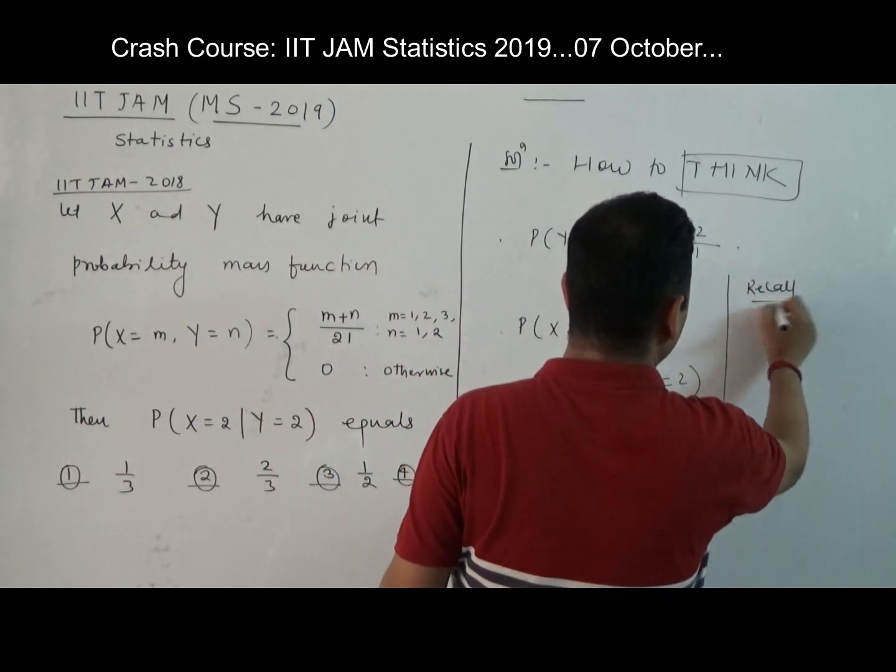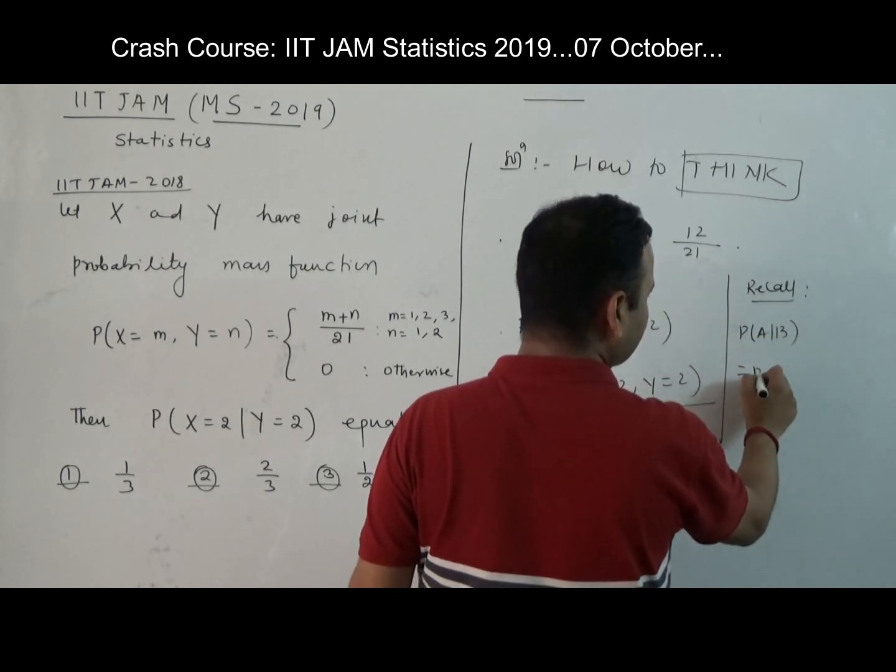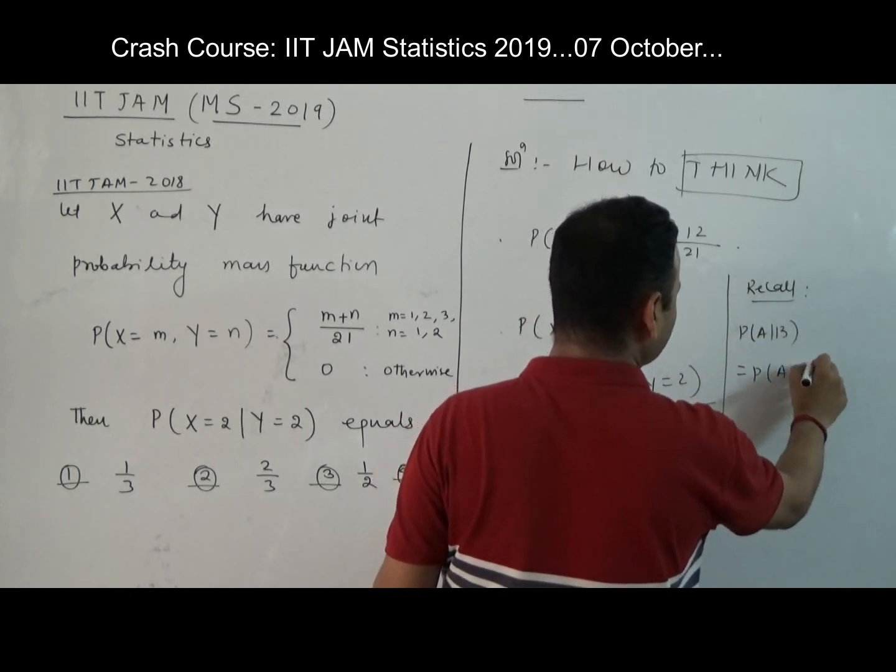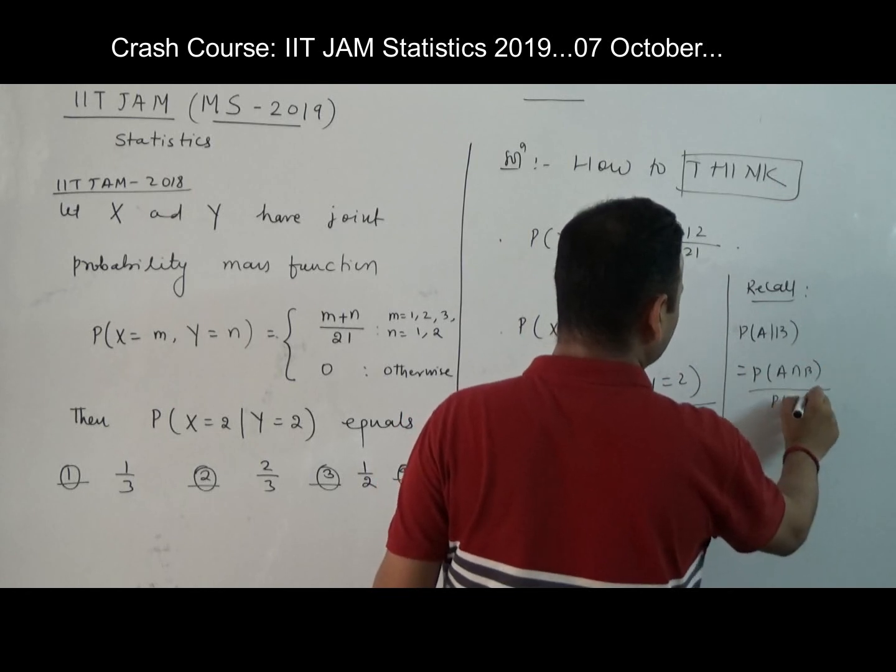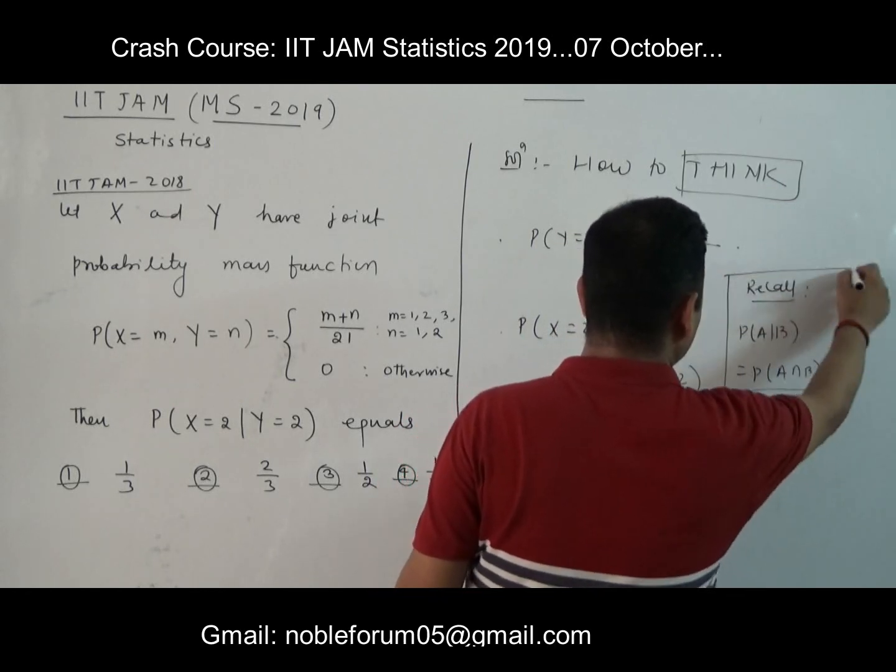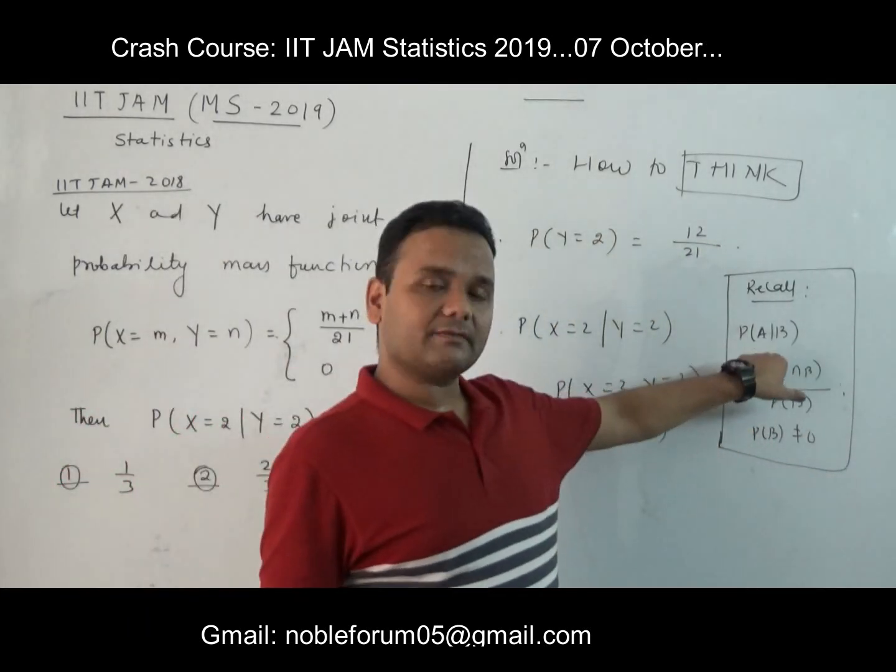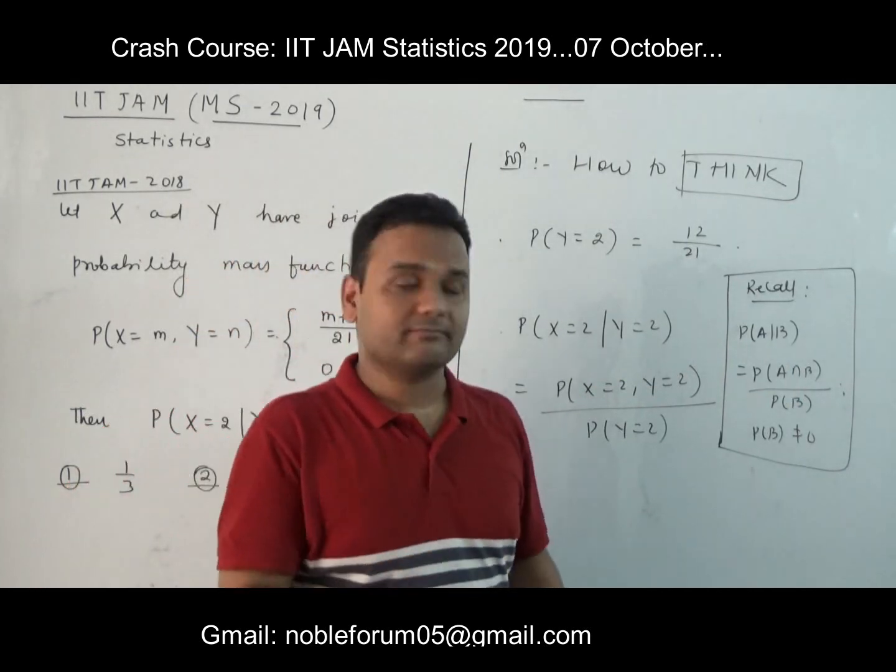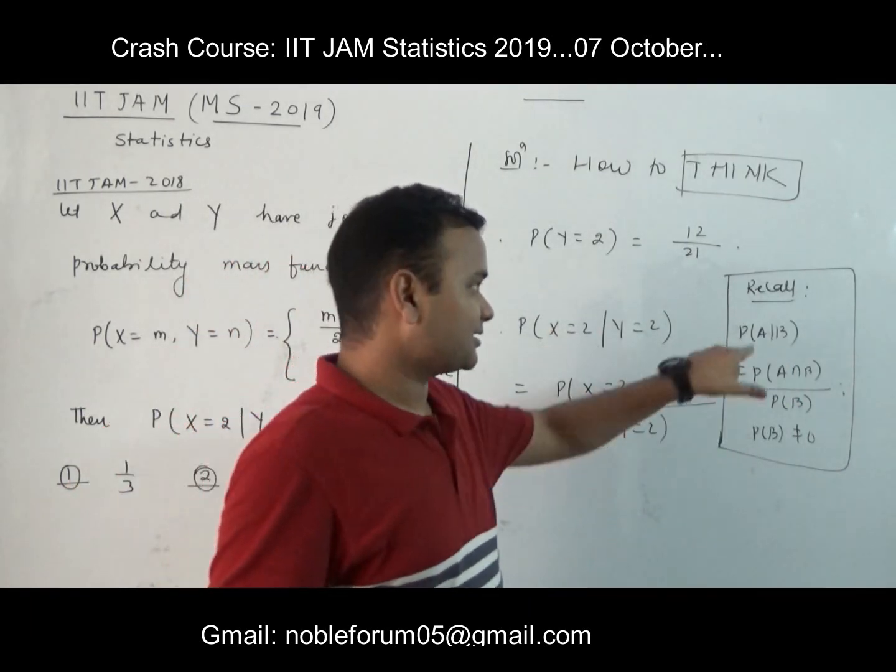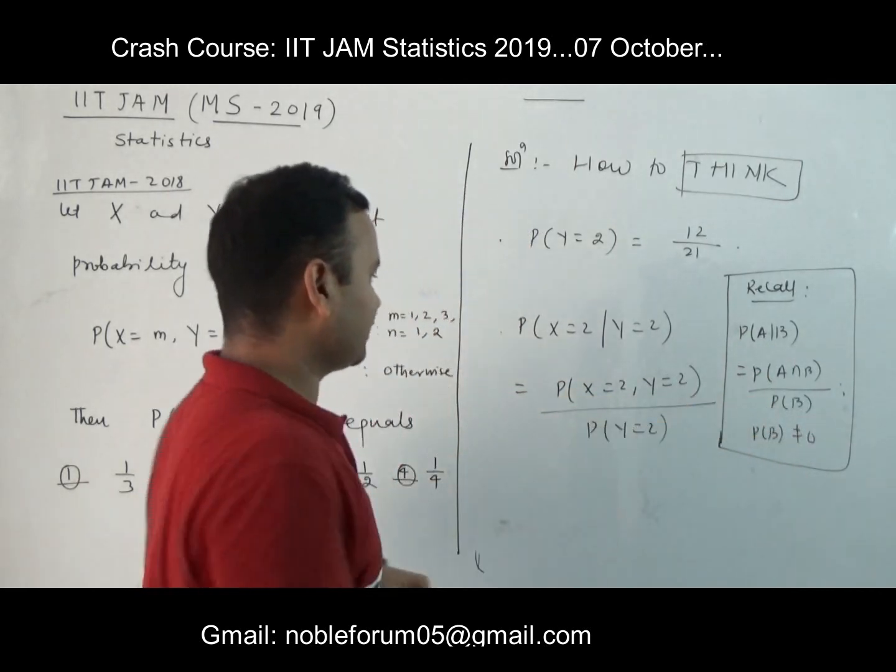Just recall: what is the probability of A given B? Probability of A given B means probability of A intersection B divided by probability of B, provided probability of B is not zero. This is the thing you should recall first. What is probability of A given B? If you don't know, it is not a crime, but at least you should learn. Now use this.